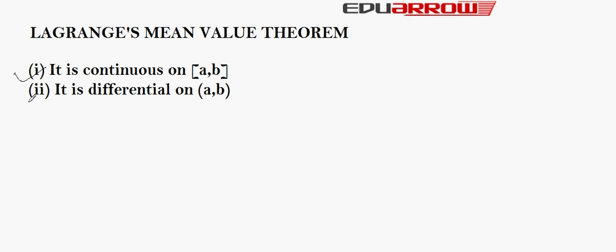The second property says that it should be differentiable on the open interval (A, B), that is, it should be differentiable on all values excluding A and B. Other than that, it says that there exists a real number C belonging to open interval (A, B) such that...